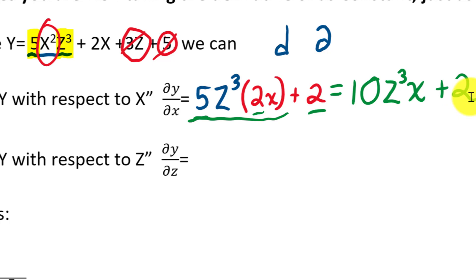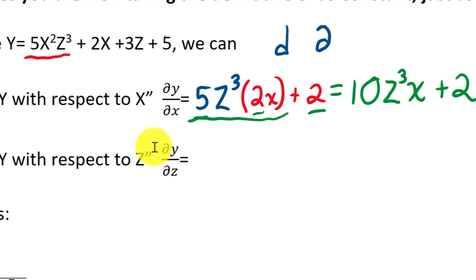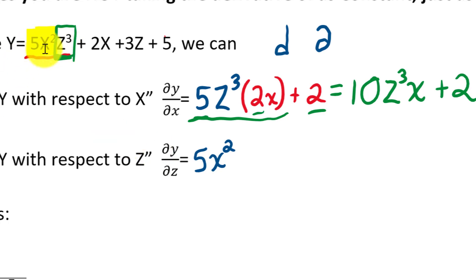Now let's take the derivative of y with respect to z — this gives us a slope or rate of change showing how fast the function changes every time we add 1 to z. Looking at the first term 5x²z³: what do we treat as a constant? The 5 and the x² part. We write down 5x², then take the derivative of z³, which is 3z². So we get 5x² · 3z².